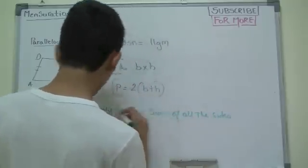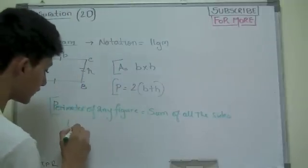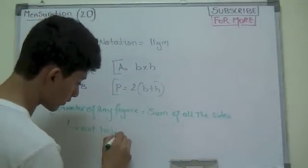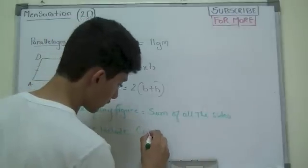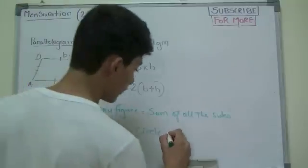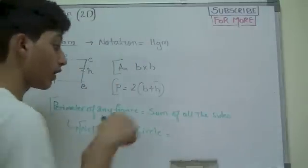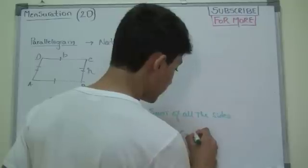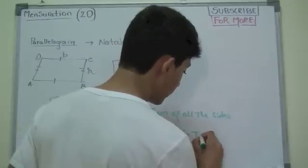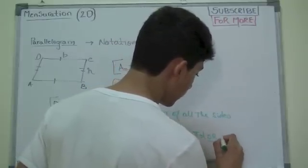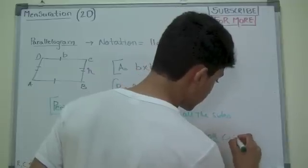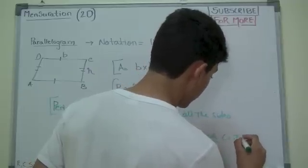But remember this does not include circle. So you have this perimeter or we should just use the correct term which is circumference is equal to pi D, or circumference is equal to 2 pi R.